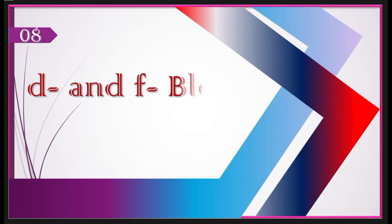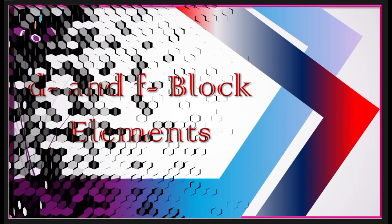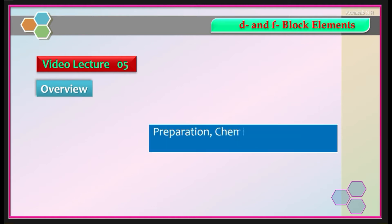Hello students, welcome back to the chapter D and F block elements. In the previous video lecture, we learned about preparation and chemical properties of potassium dichromate. In today's video lecture, we are going to learn preparation, chemical properties and structure of potassium permanganate KMnO4. This is also one of the important concepts and the preparation is asked for 3 marks. Let us begin our today's session.